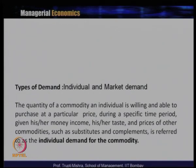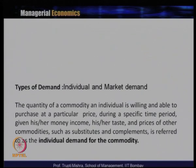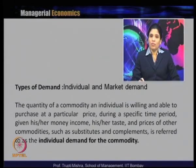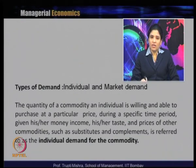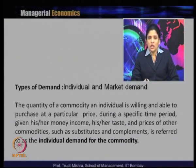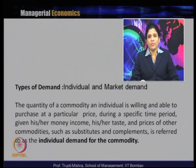The first type is individual and market demand. The quantity of a commodity an individual is willing and able to purchase at a particular price during a specific time period, given their money income, taste, and prices of other commodities such as substitutes and complements, is referred to as the individual demand for the commodity. In simplified terms, individual demand is what an individual is willing and able to purchase at a particular price in a specific time period, keeping their taste and the available substitutes and complements in mind.